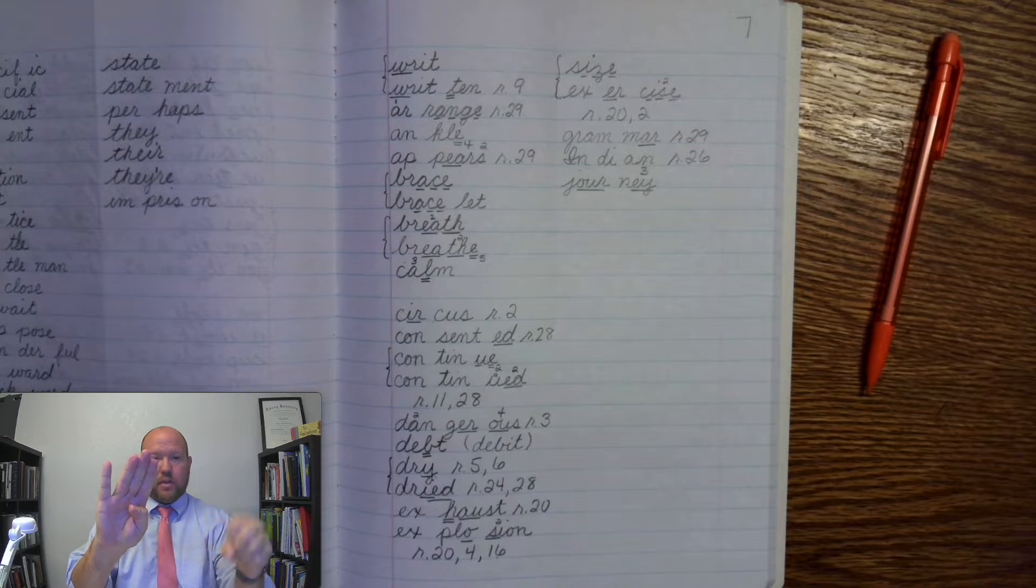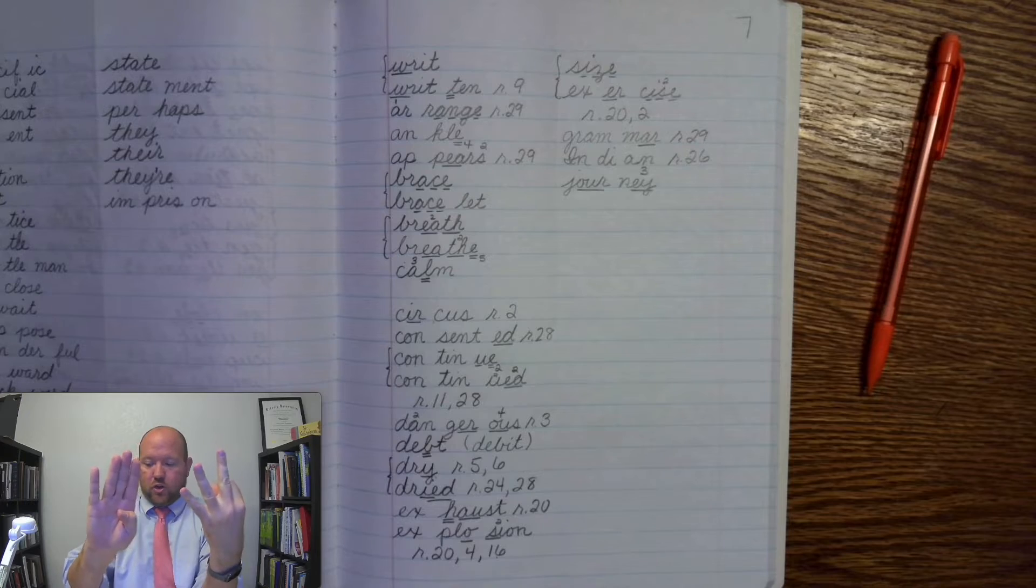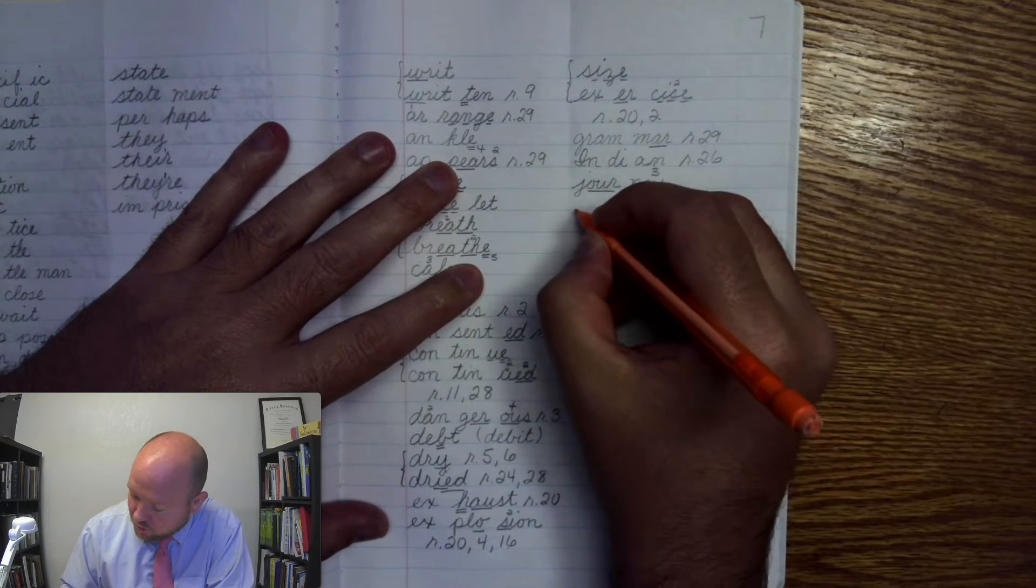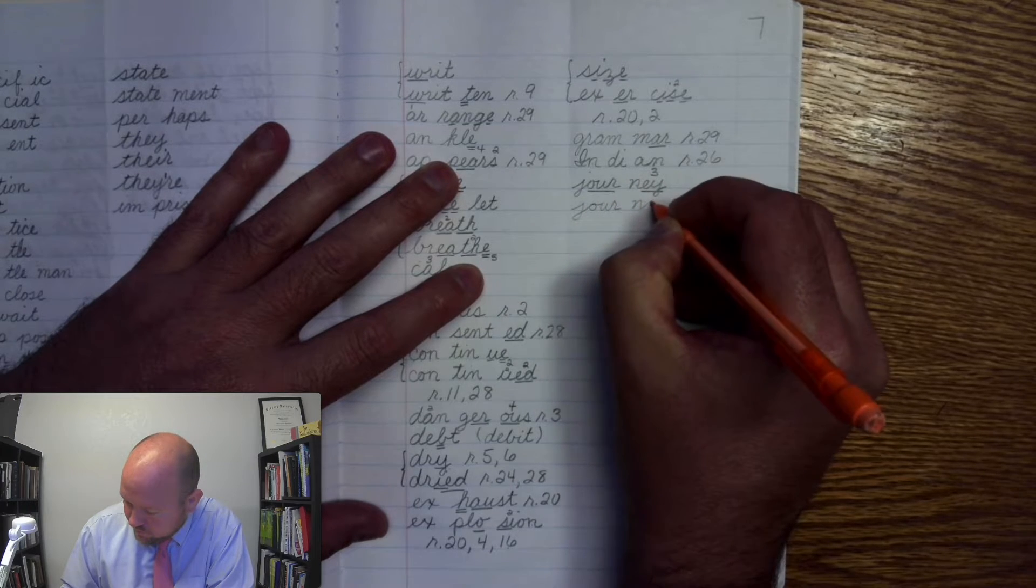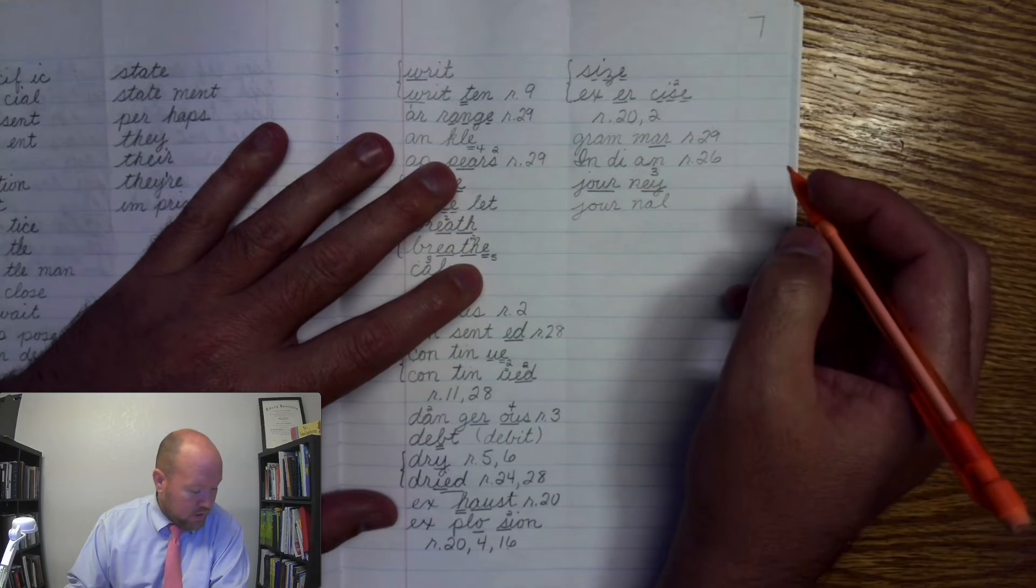Jurnal. J-ur, our new phonogram. N-A-L. Journal. It's like journal. Jurnal.